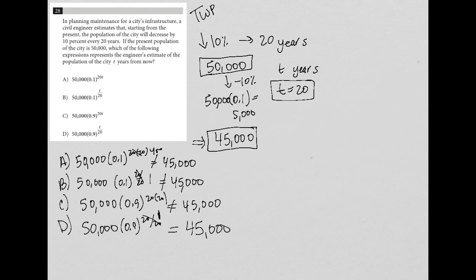0.9 represents 90%. And after 20 years, we expect the population to be 90% of what it was 20 years prior, because 90% directly represents a 10% decrease. So our final answer here is going to be choice D.